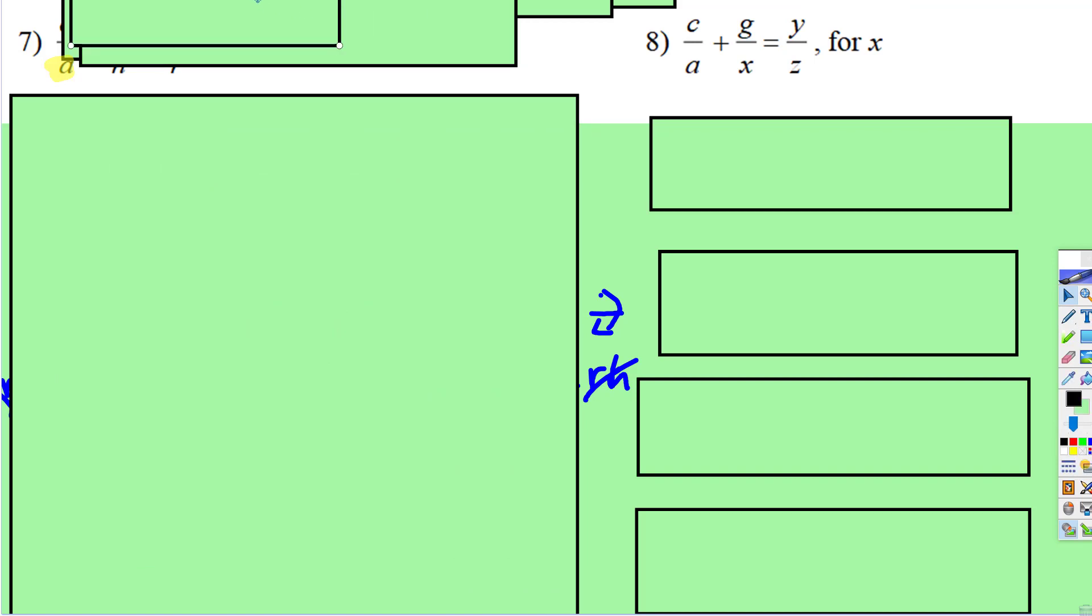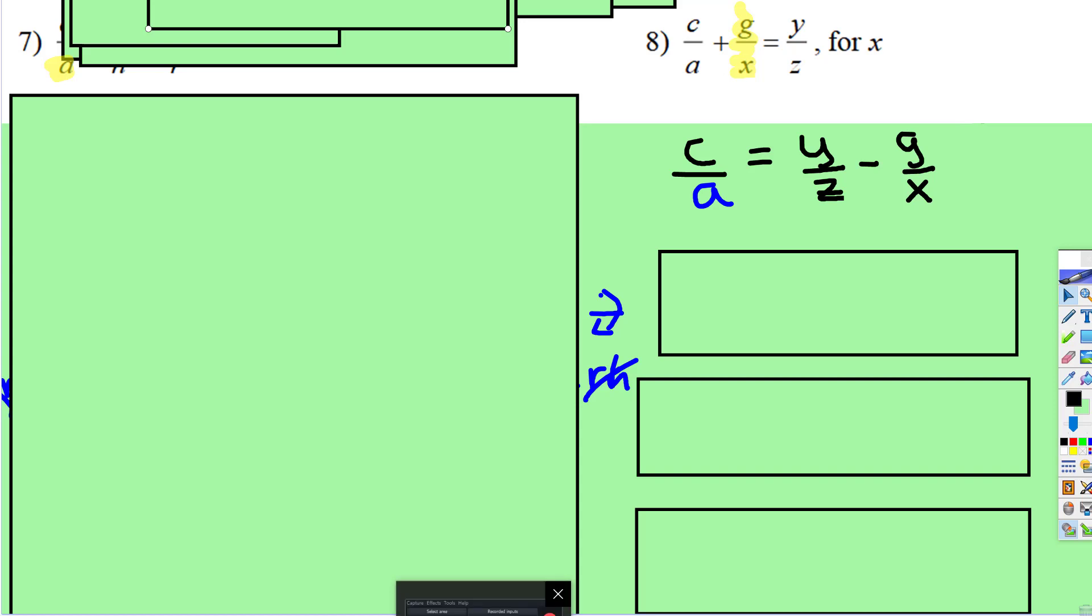Alright, so now we have another equation over here, and we now need to get the x by itself. So I'm going to subtract both sides the c divided by... I was so accustomed to getting a by itself that I went ahead and subtracted, so I'm going to go ahead and pause this.